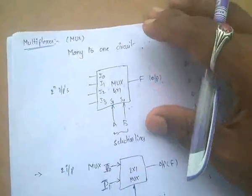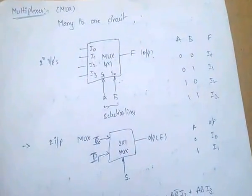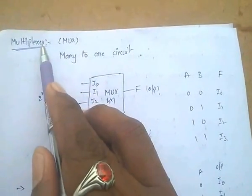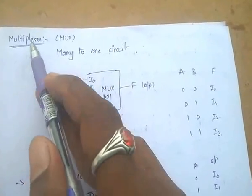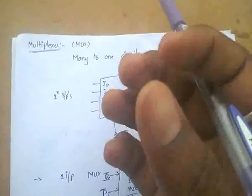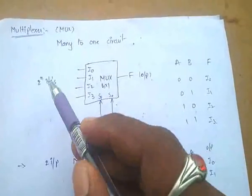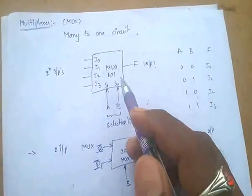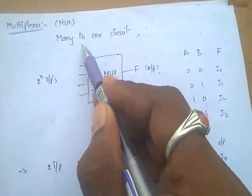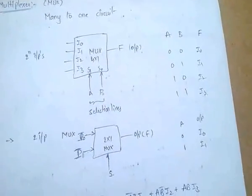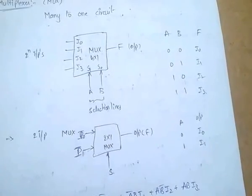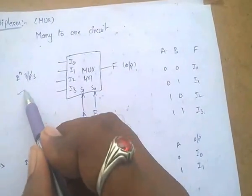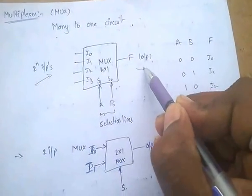Next topic: multiplexers, also called MUX. As the name implies, it multiplexes — meaning it has many inputs and one output. It is called a many-to-one circuit. It has 2-power-n inputs and only one output, selected by n selection lines.